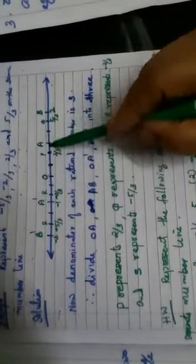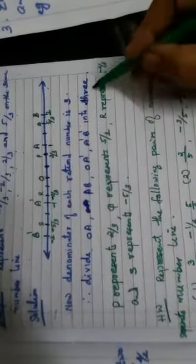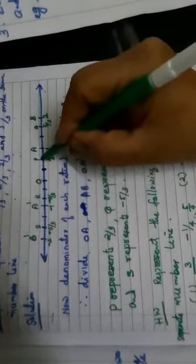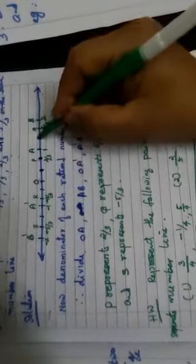So, divide OA, AB, OA dash, A dash, B dash etc. into 3. So, divide this as 1, 2, 3. 1, 2, 3.